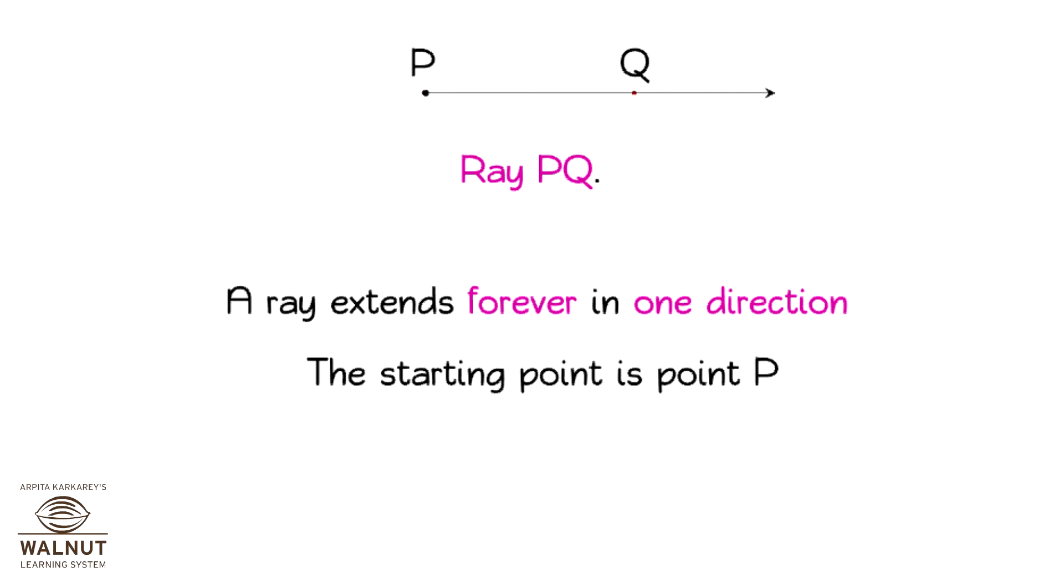What is this? This is ray PQ. You must have noticed that the ray has an arrow at only one end. A ray extends forever in one direction. The starting point is point P. We know this because there is an arrow on the other side.